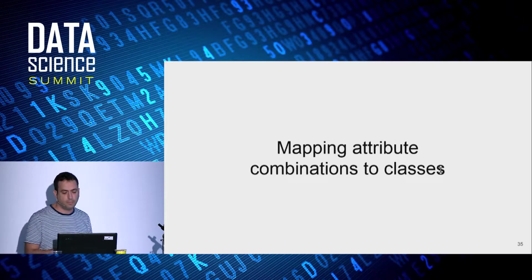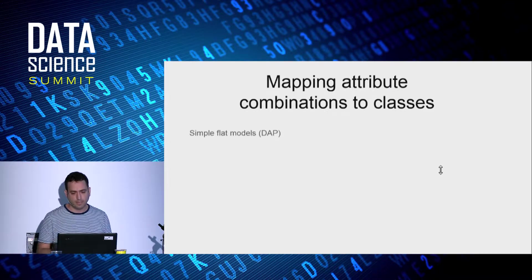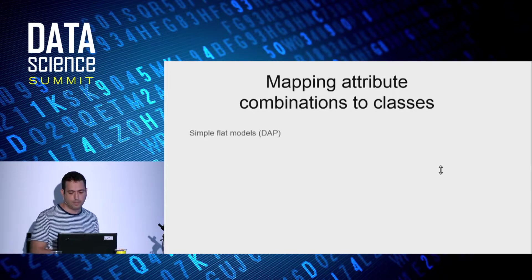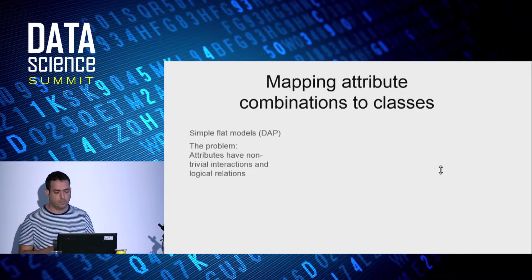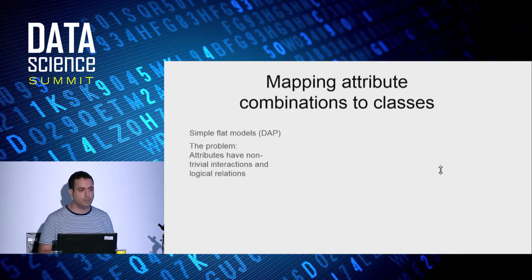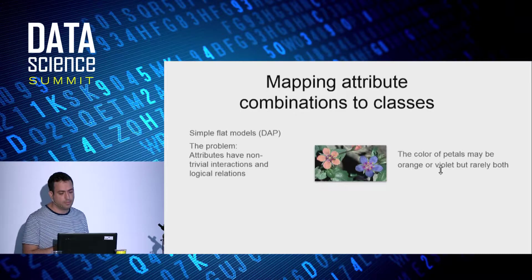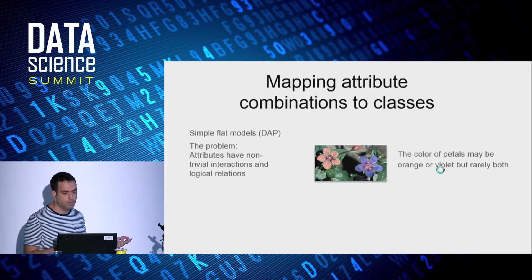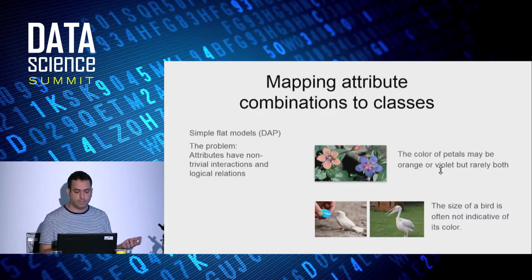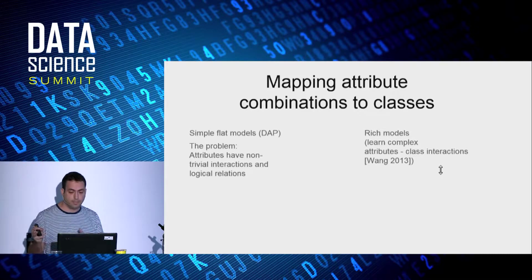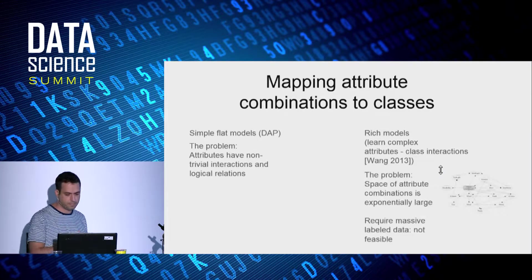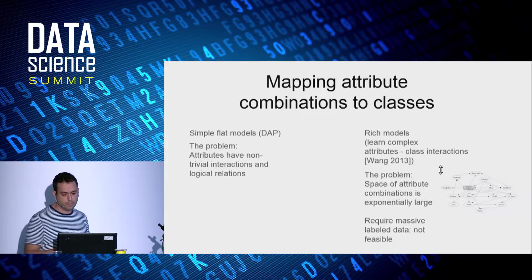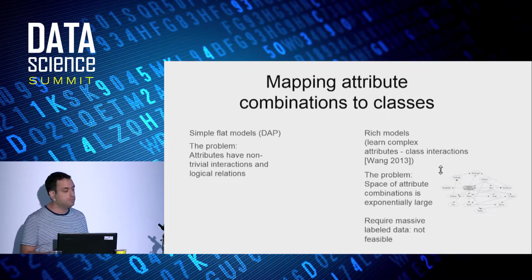So now the trick in zero-shot learning with attributes is how to map attribute combinations to classes. And one way is to take a flat approach like we've seen in DAP, which treats all attributes equally. But such models ignore complex interactions between attributes, because attributes have non-trivial interactions and logical relations. For example, the color of petals may be orange or violet, but rarely both. Or the size of a bird is often not indicative of its color. On the other hand, we can learn a rich model that accounts for complex interactions of attributes and classes. However, the space of attribute combinations is exponentially large, and fitting such a complex model requires a lot of training data, which is usually not available.